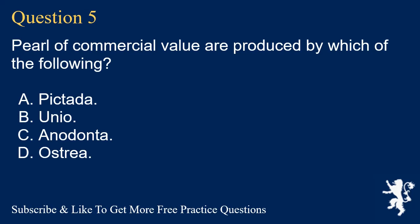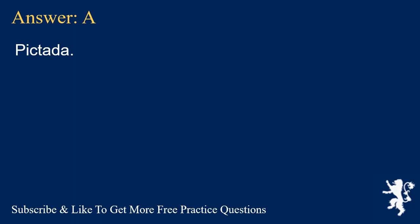Question 5. Pearls of commercial value are produced by which of the following? A. Pictida. B. Unio. C. Anodonta. D. Ustria. Answer: A. Pictida.